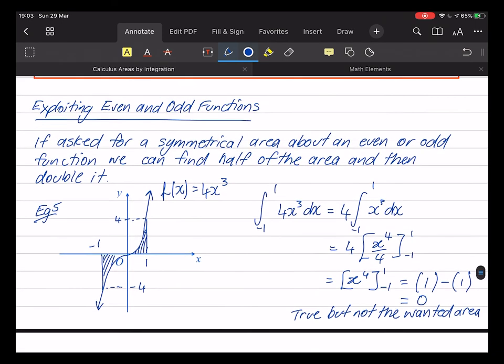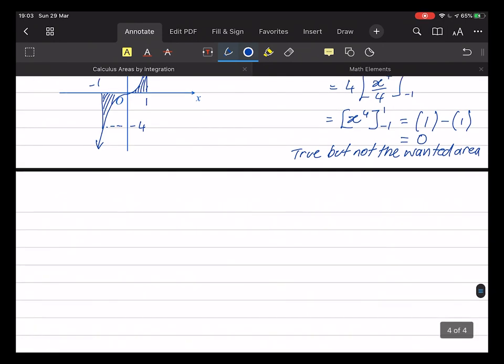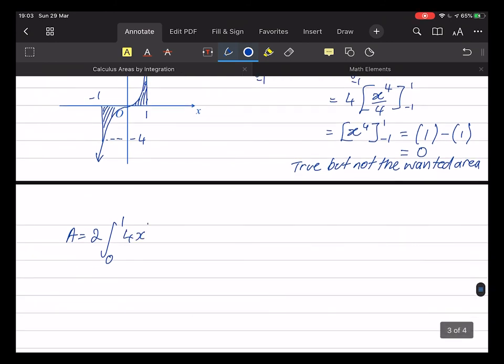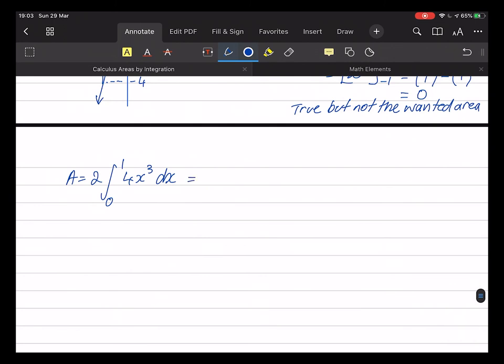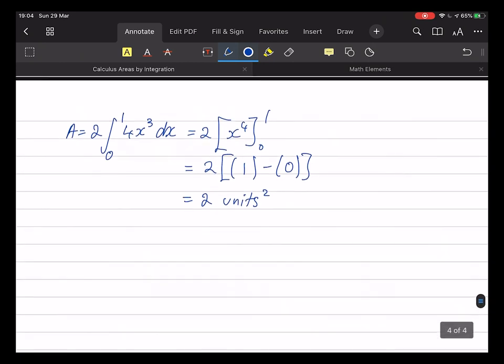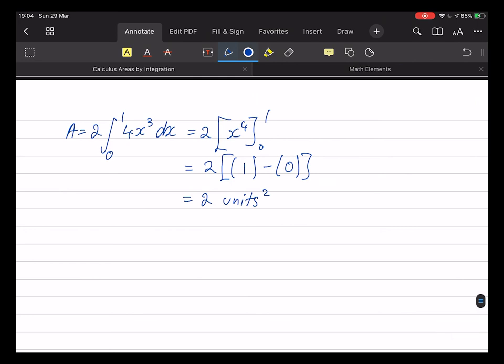Now, of course you could use this kind of approach where you broke it up into two pieces and took the absolute value. But of course, it's an odd function, and so it's symmetrical, and so the area on the left is equal to the area on the right. So again, this is true, but it's not the area that we want. In this case, the area is going to be twice that from 0 to 1 of the function. Evaluate that thing, get x to the 4, the 4's cancel, 0 to 1. So that's 2 times 1 to the 4 is 1, 0 to the 4 is 0. I end up with 2 units squared.